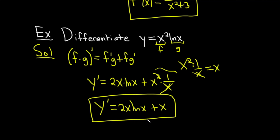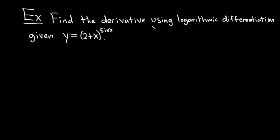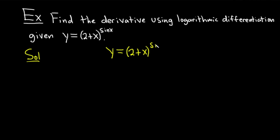Let's do something a lot more challenging. In this example, we are going to find the derivative using logarithmic differentiation, given y equals 2 plus x, all raised to the sine x. The first step is to write down the question: y equals (2 plus x) to the sine x. Now we're going to take the natural log of both sides, because we want to bring down the sine x.